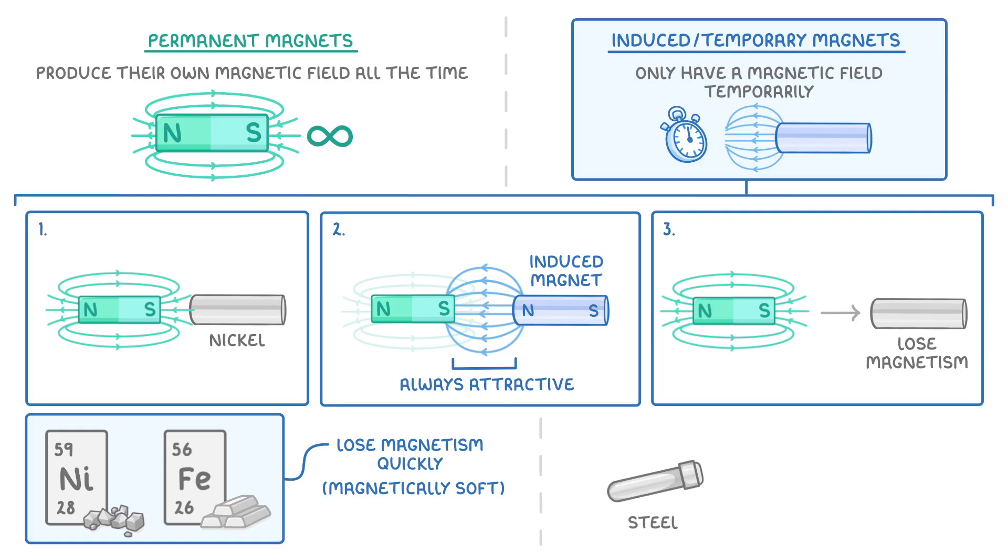Others though, like steel, lose it more slowly, and we call these ones magnetically hard materials.